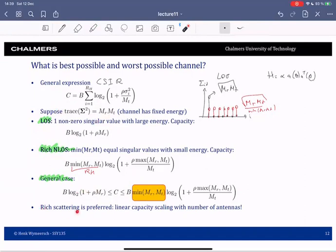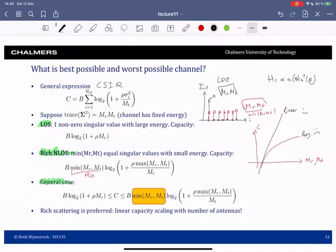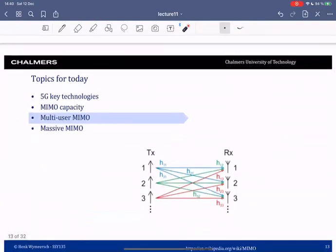What this means is that if we have a choice to operate in line-of-sight or in rich non-line-of-sight with this fixed energy constraint, then we prefer to have a rich scattering environment. In this rich scattering environment we have a linear scaling of the capacity with the number of antennas. This is very important and very different from the line-of-sight case. Here by putting more antennas we only have logarithmic scaling. In the line-of-sight case we have logarithmic scaling, but in the rich scattering case we have linear scaling. So linear is what we prefer and we don't like logarithmic scaling. What we care about at the end of the day is that if we have a choice, we prefer to have rich scattering because this gives us the best possible capacity with this total fixed energy constraint. With this in mind, we go on to multi-user MIMO after the break.